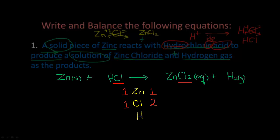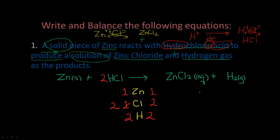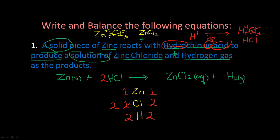We need two on the reactant side. HCl is the only place we can add another chlorine — we put a coefficient of 2 in front, so now we have 2 HCl and two Cl's. Now let's balance hydrogens: on the reactant side with 2 HCl we have two hydrogens, and on the product side with H₂ we have two hydrogens. We are now balanced.